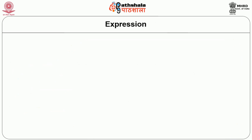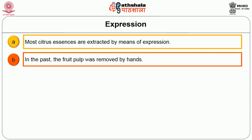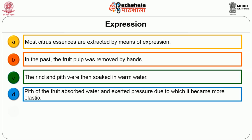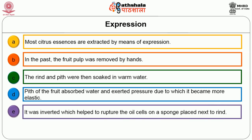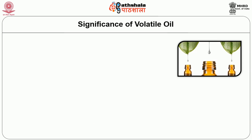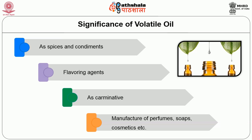The next one is expression. Most citrus essences are extracted by means of expression. In the past, the fruit pulp was removed by hand. The rind and pith were then soaked in warm water. The pith of the fruit absorbed water and the pressure exerted caused it to become more elastic. It was inverted which helped to rupture the oil cells on a sponge placed next to the rind. As the sponge became saturated with oil, it was squeezed to release the volatile oil which was collected in a vessel and then decanted. The extracted oils are commonly used as spices and condiments, as flavouring agents, in manufacturing of perfumes, soaps, cosmetics, etc.